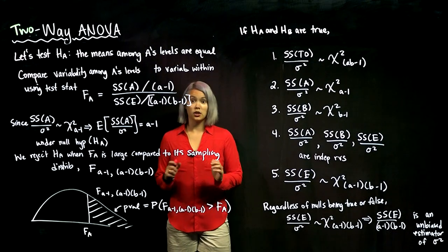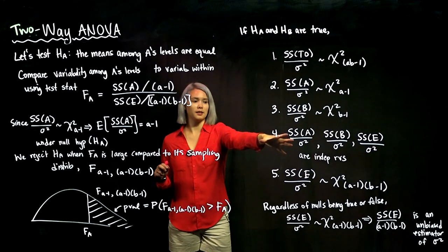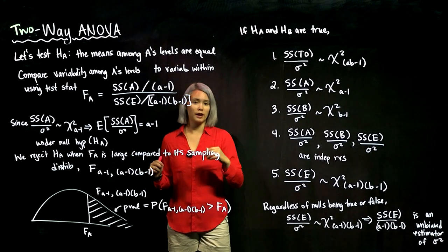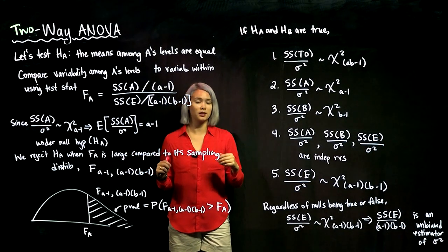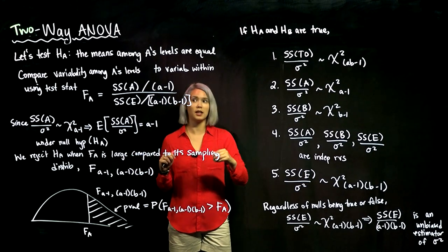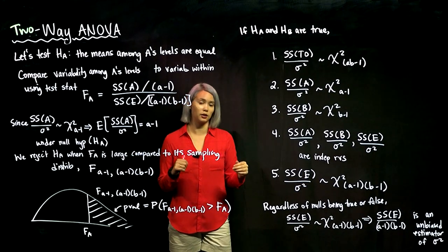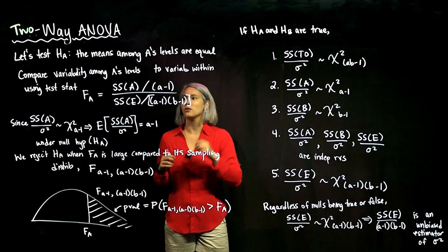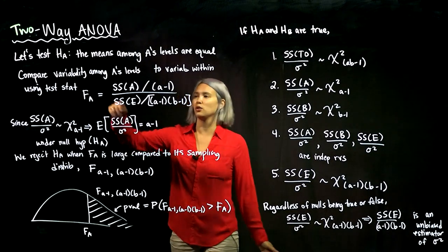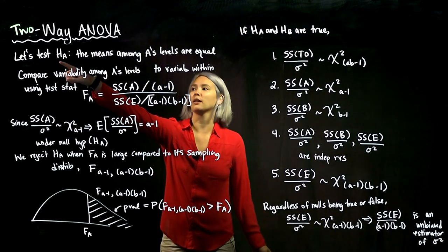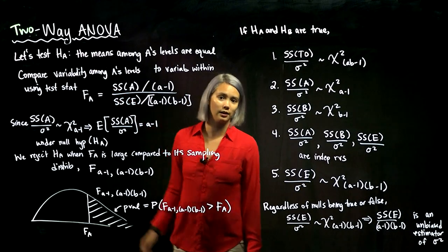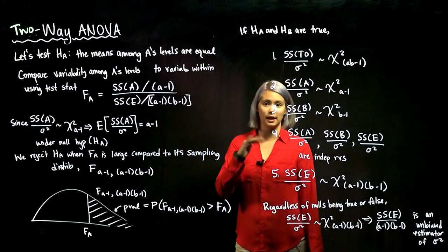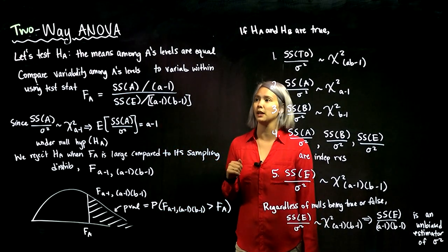So now we can work with these findings to derive our test statistics to test whether the means among A's different levels are truly equal. We'll work first with the null hypothesis for A, and then we can do the exact same thing for the null hypothesis for B.